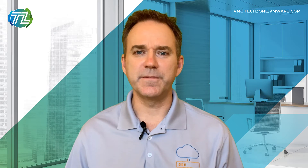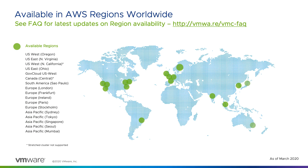Amazon Web Services provides extensive public cloud infrastructure so applications can be deployed to over two dozen regions around the world. VMware Cloud on AWS takes advantage of the global AWS footprint, allowing you to select a location that meets your business and technical requirements.